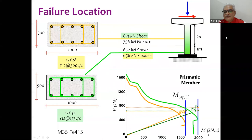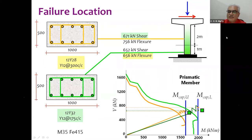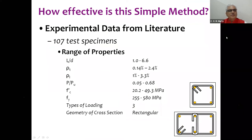The moment capacity of the upper section is lower and that of the lower section is higher, so the failure occurs in the lower-capacity segment — confirming the analysis.